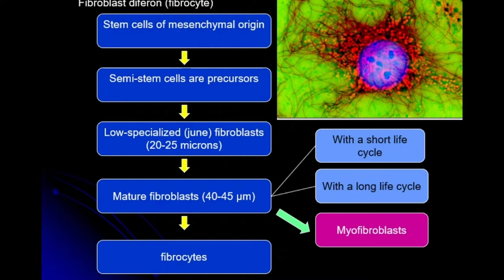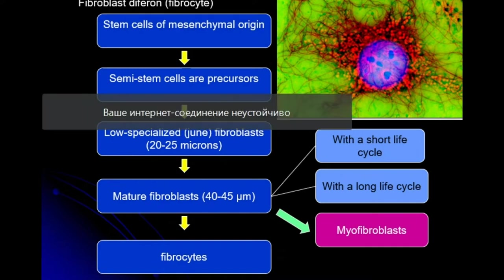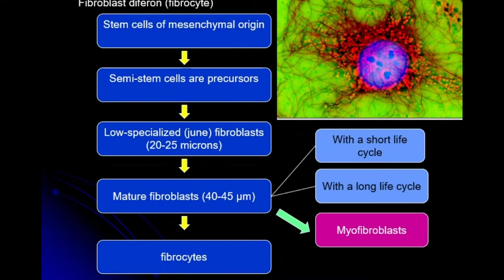Fibroblasts are the main aboriginal cells of connective tissue and have a full diferone present. The stem cells of mesenchymal origin differentiate into semi-stem cells, then into low-specialized fibroblasts, then into mature fibroblasts. The next possible ways of differentiation are into fibrocytes or into myofibroblasts.